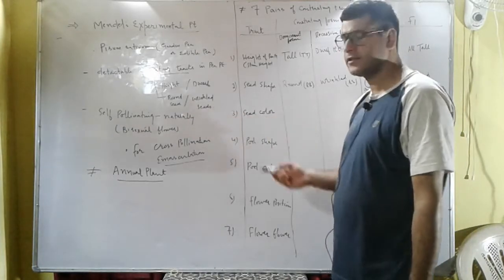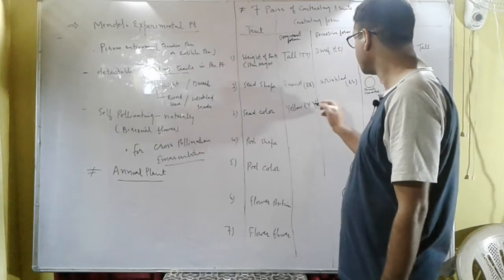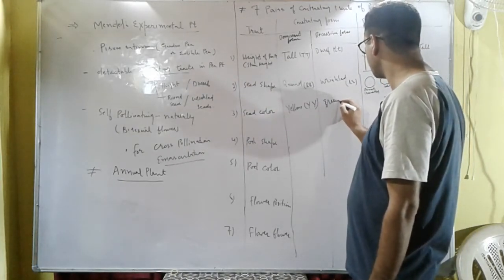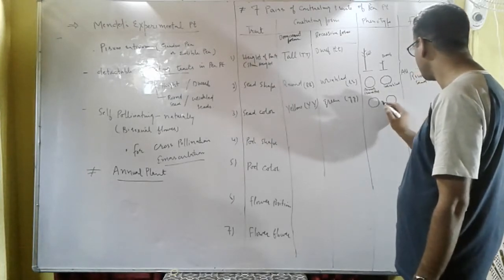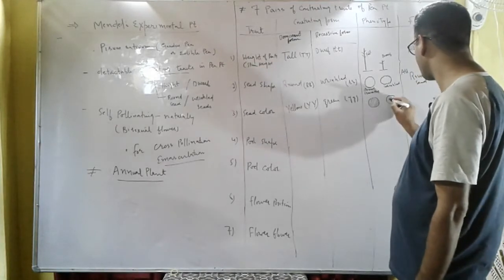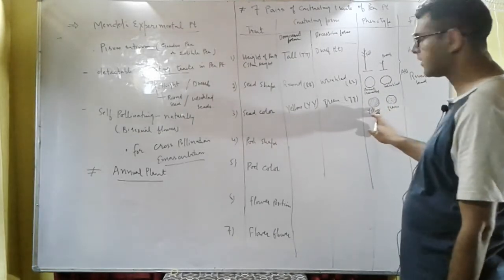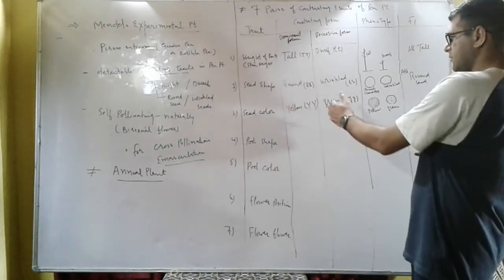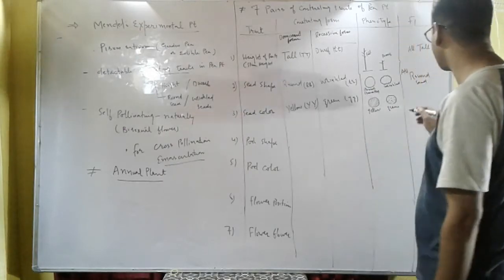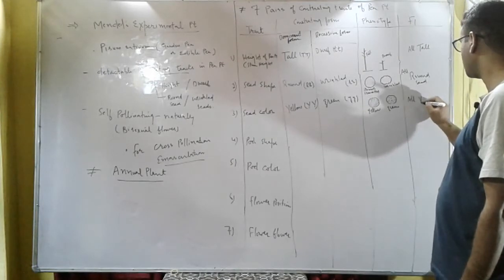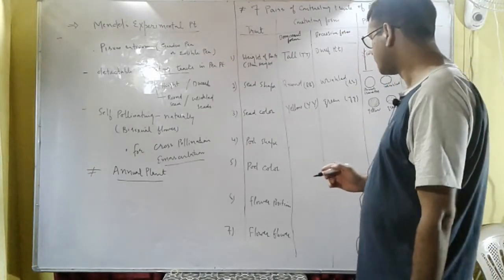The third trait is seed color. The color of the seed can be yellow, represented by capital Y, or green, represented by small y. If a pea plant with yellow-colored seeds is crossed with a pea plant with green-colored seeds, in the F1 generation all pea plants have yellow-colored seeds.